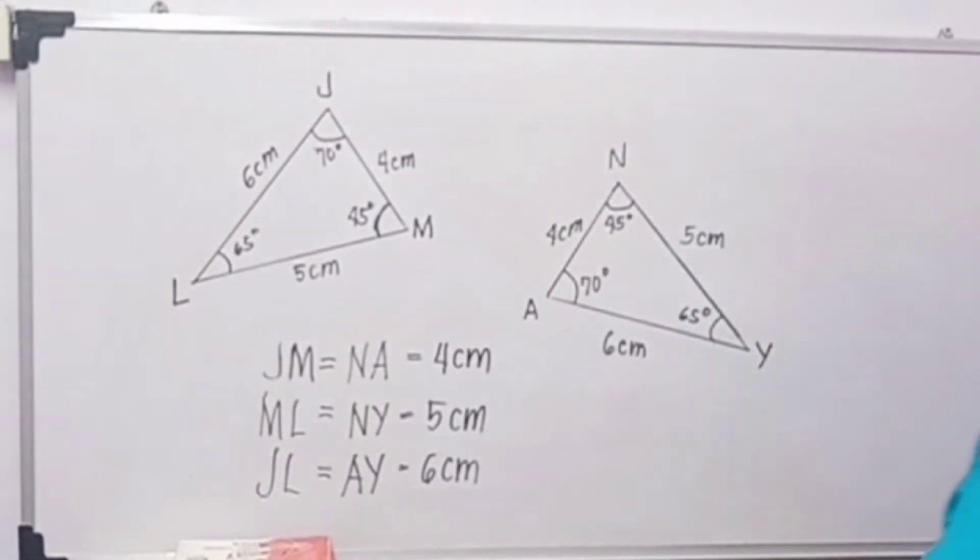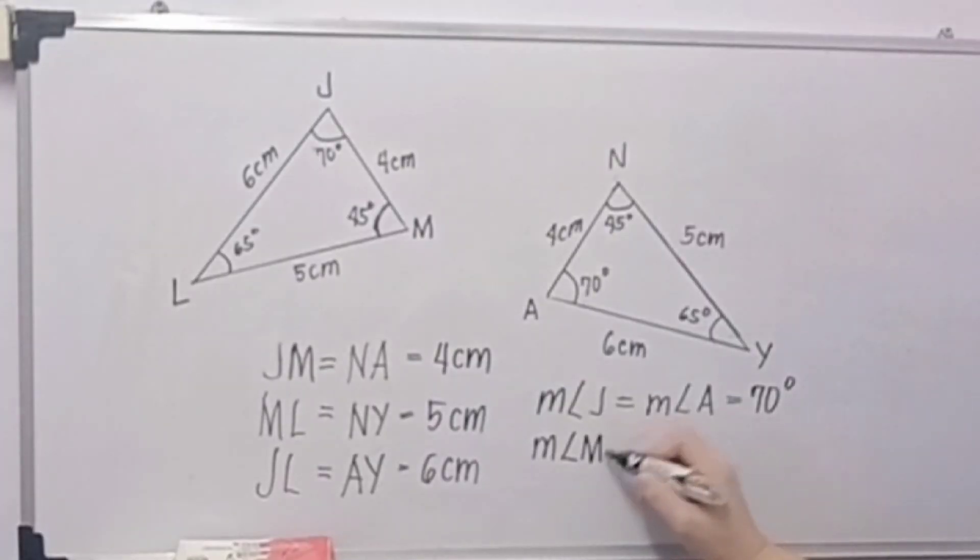Now, paano yung sa angles natin? So sa angles naman, we have measure of angle J is equal to measure of angle A, which is 70 degrees. And then we have measure of angle M is equal to measure of angle N, which is equal to 45 degrees.